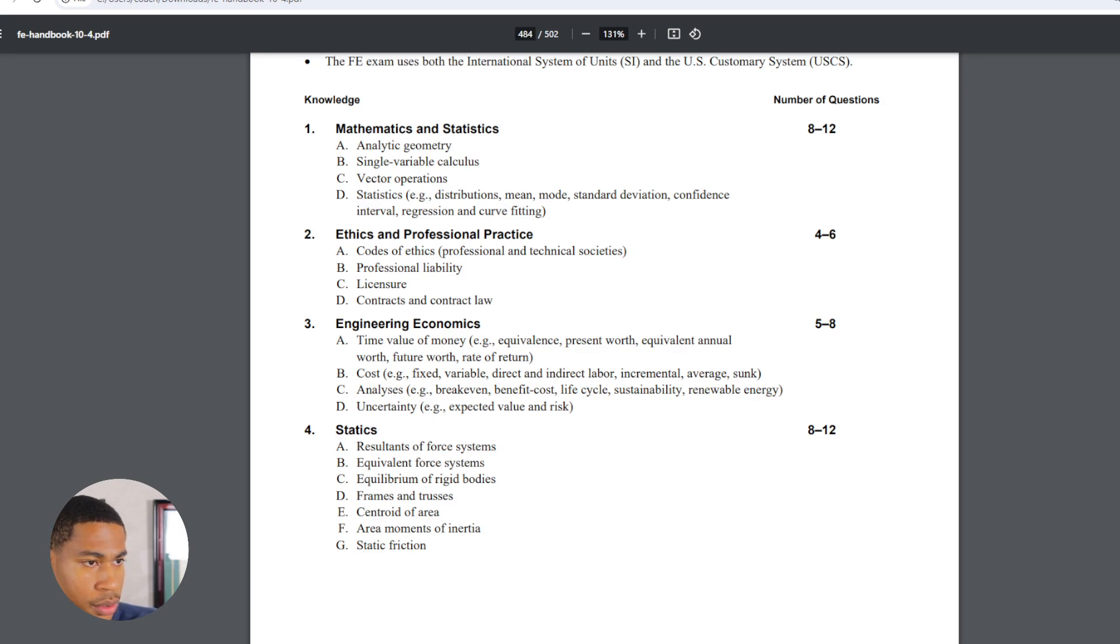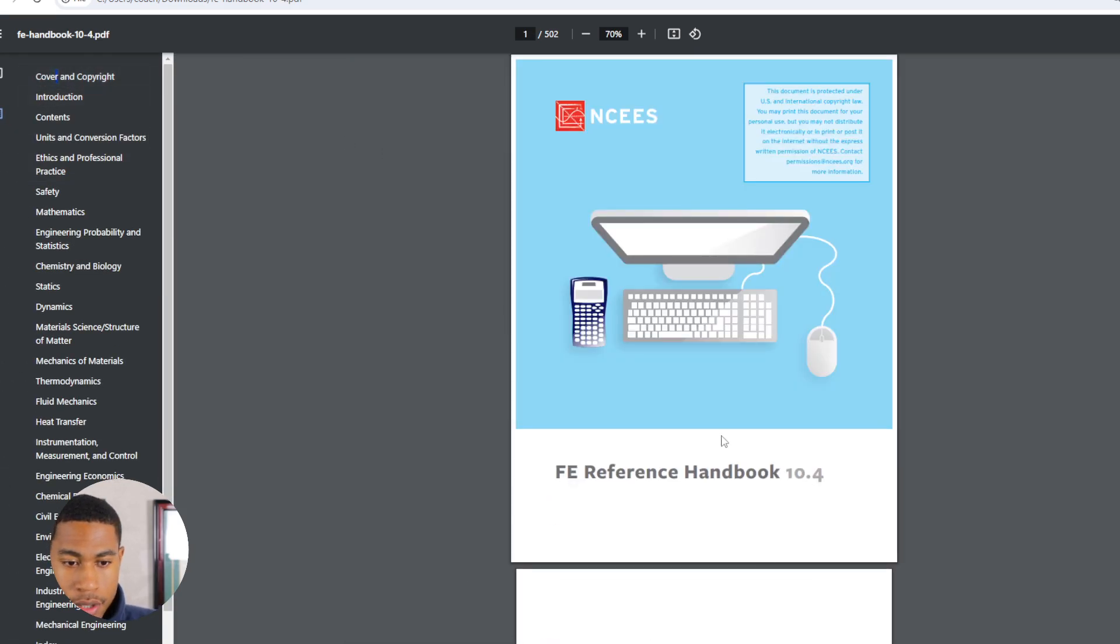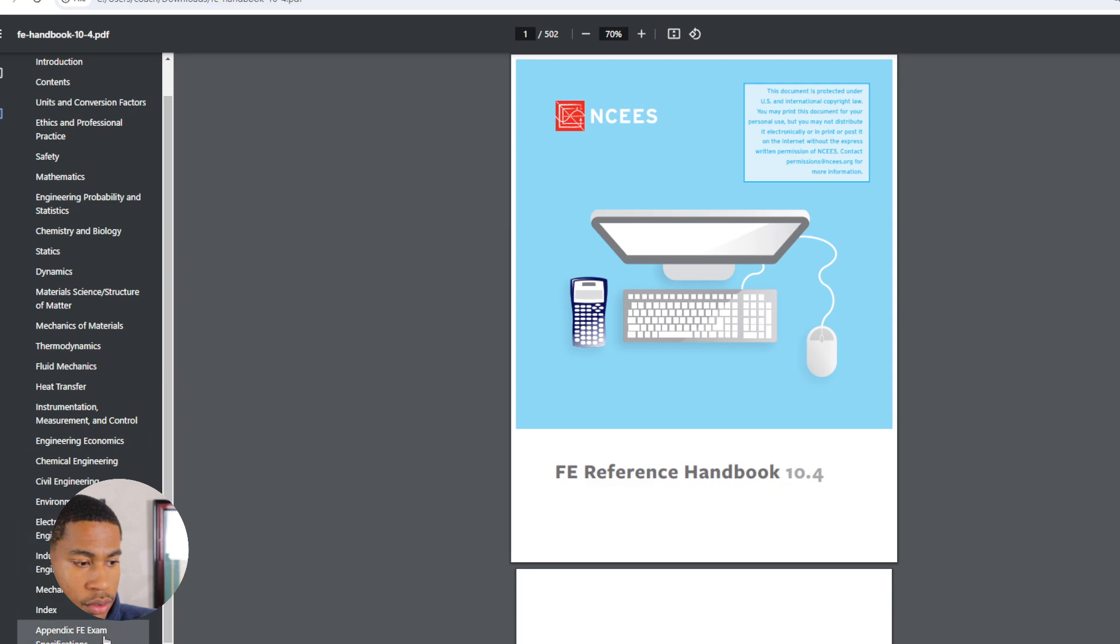So I want to show you how I first got here. So we'll start. First you should have your reference handbook downloaded and this will be your cover. And then from there you want to use your bookmarks. Click your bookmarks and then you want to scroll down to the bottom to the appendix FE exam specifications.